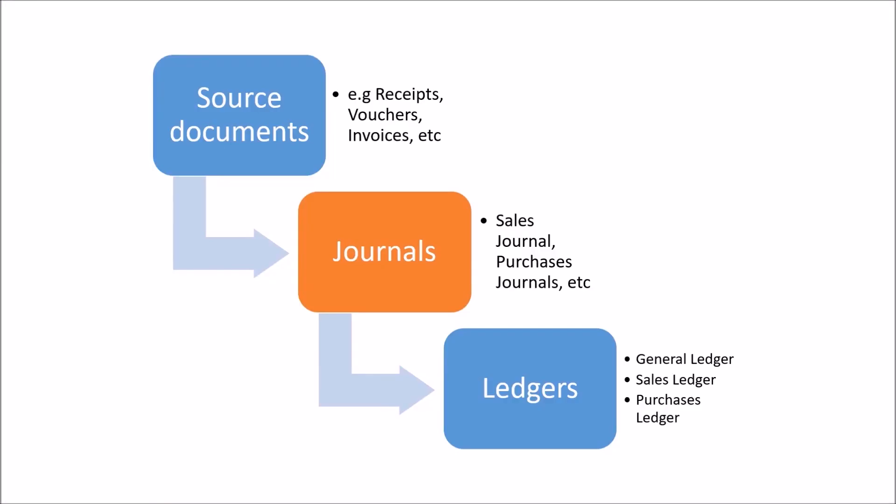When transactions take place, the first book they are recorded in is called the journal. The journal is subdivided into the following columns as shown on the screen. We have the date column. Each page of the journal has the date written — we normally write it by first stating the year, then the month, and then the actual date. When writing in the date column, the year and the month don't need to be repeated until a new page is begun, or until the year or the month changes.